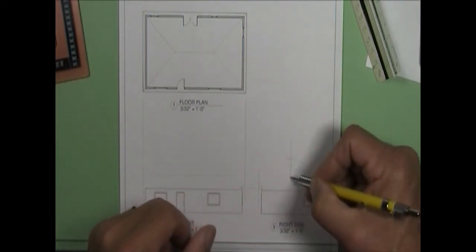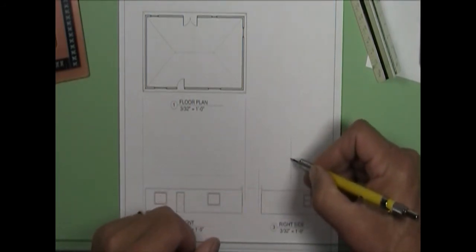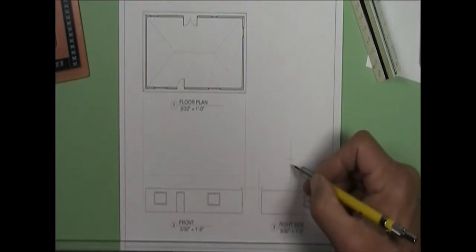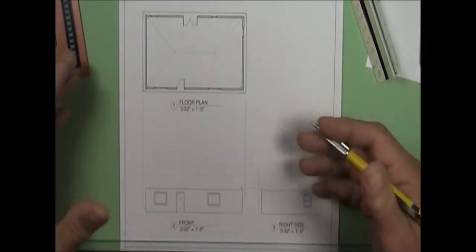And I went ahead and marked out a 4, 6, 8, and 12 slope heights for all of these. I went ahead and marked those out.